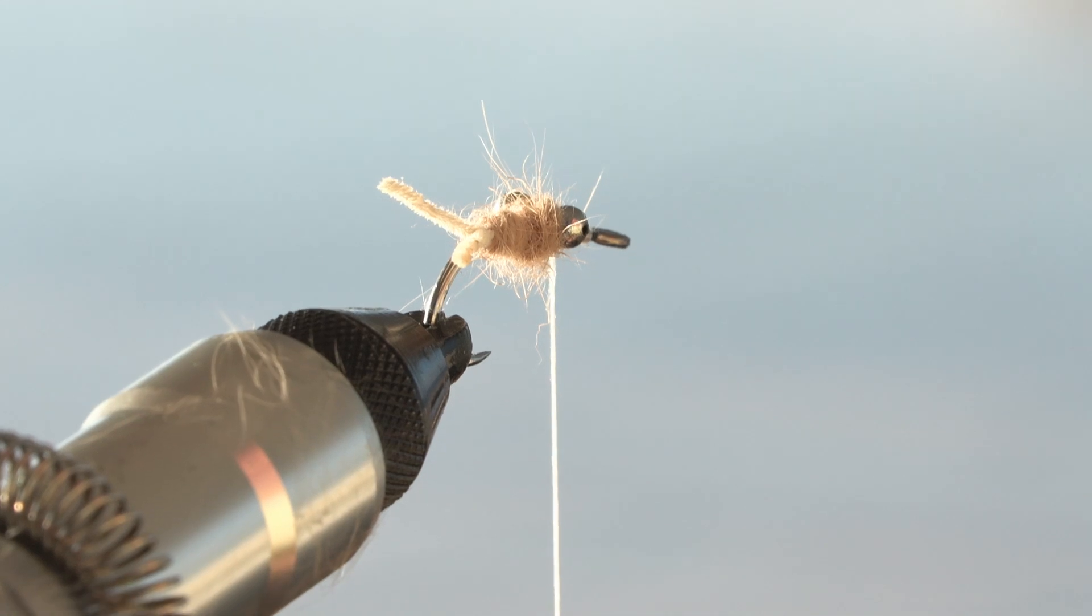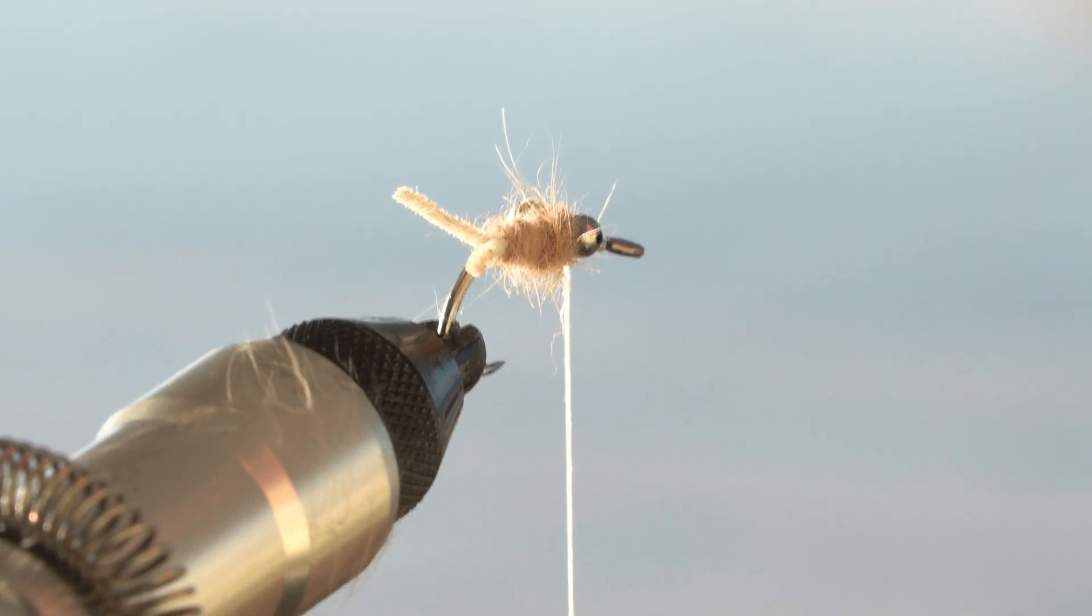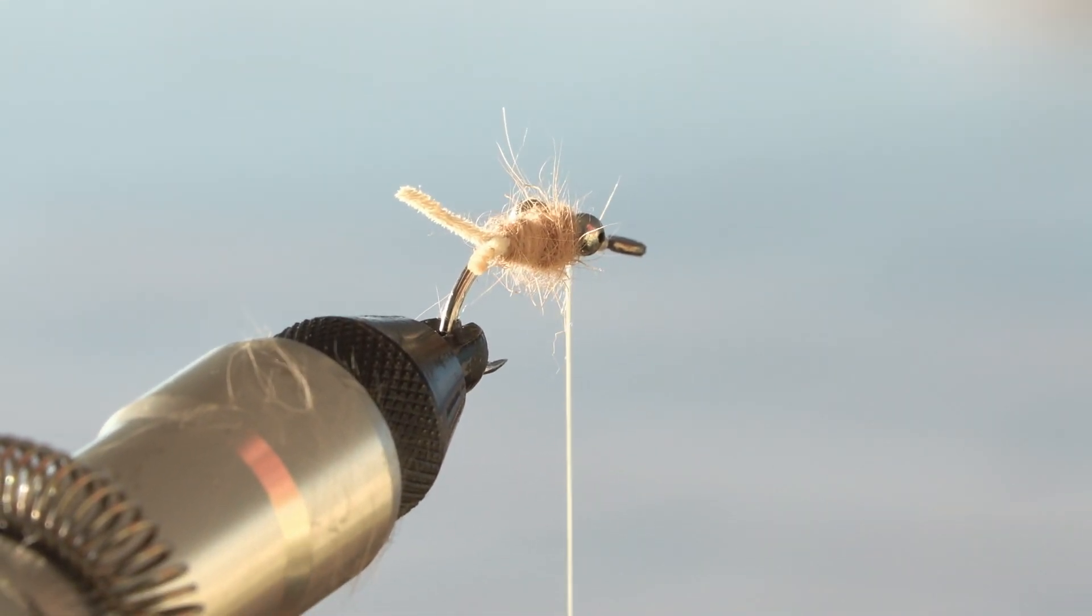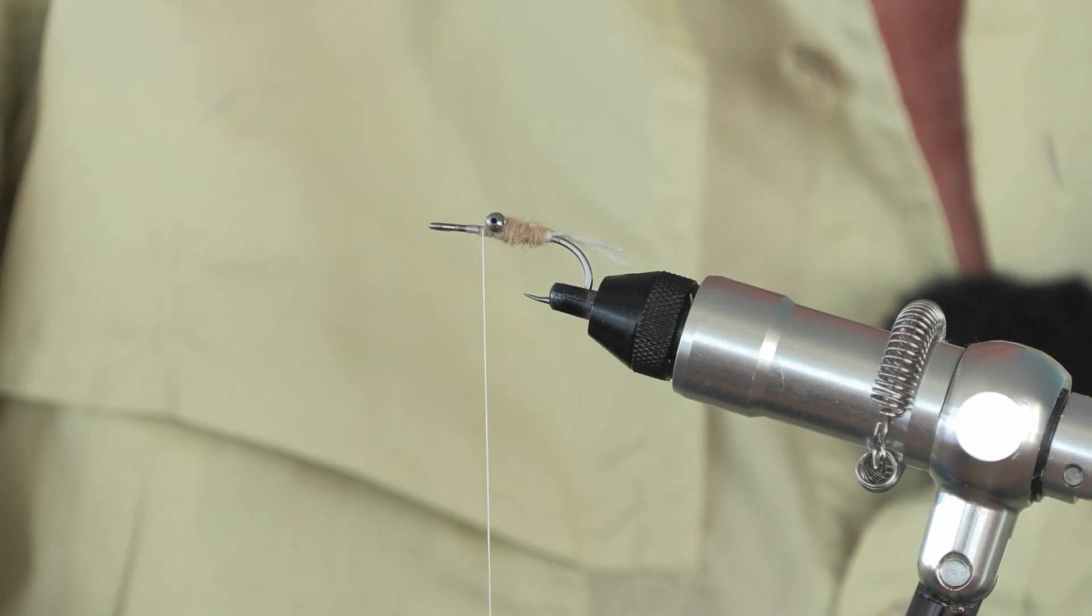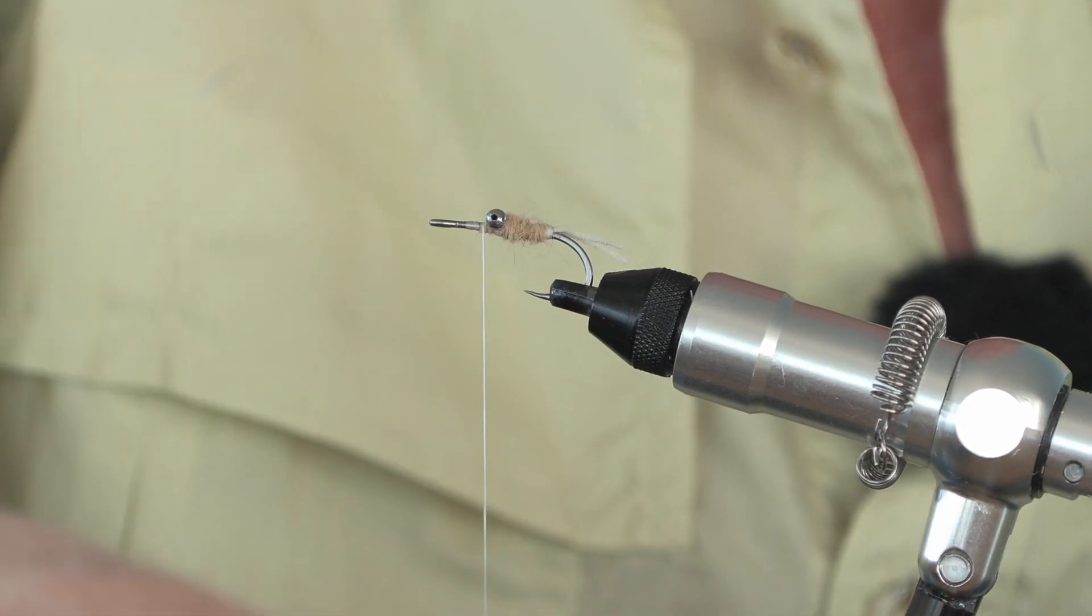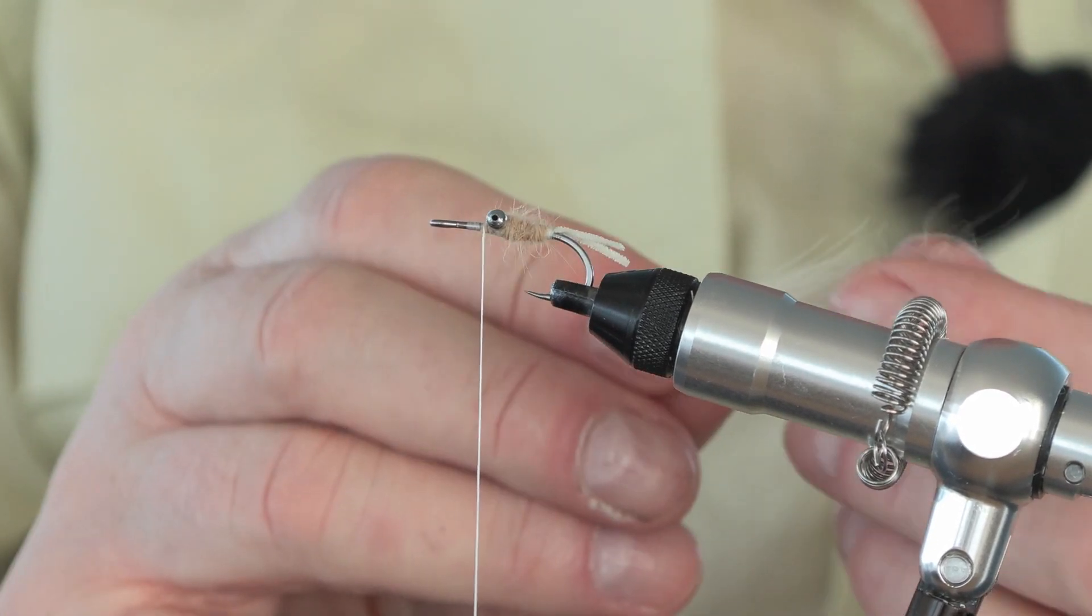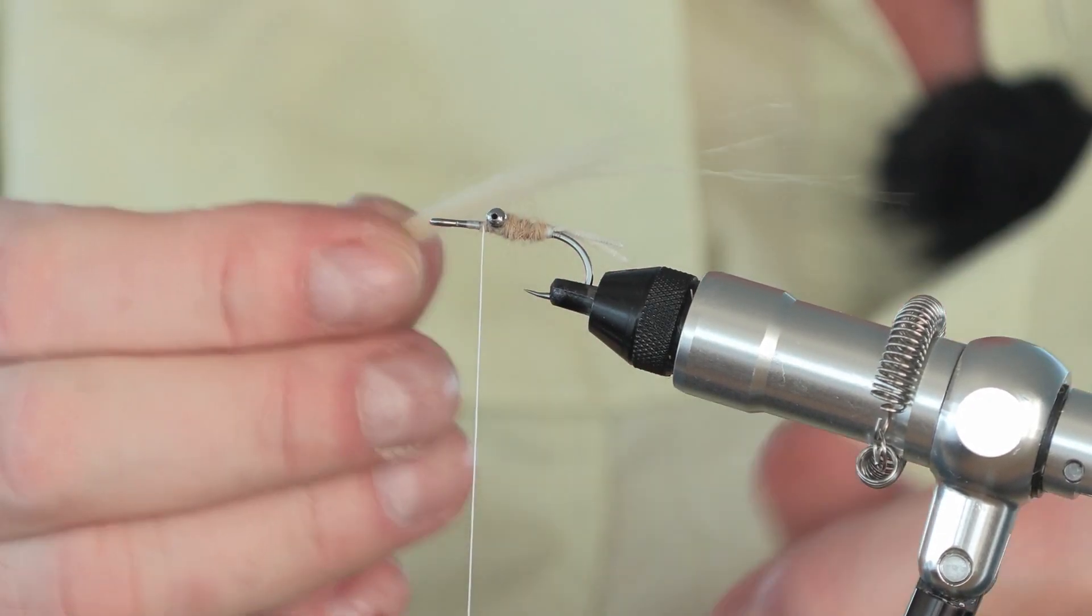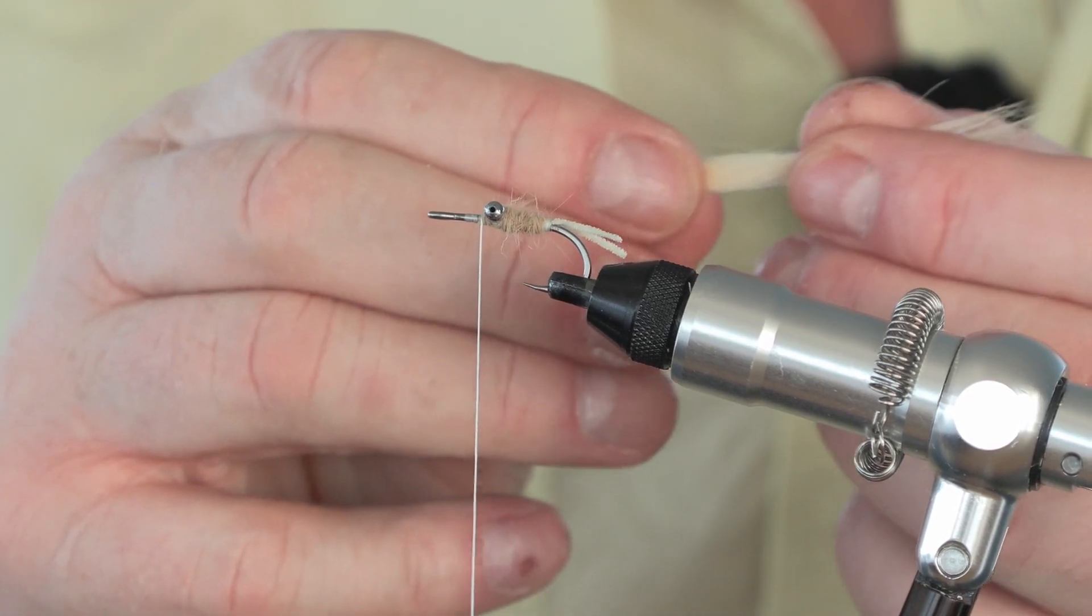Next we put in the beard. Now the beard is there to actually imitate the legs of the shrimp. And for this I use tan colored nyatt hair. Nyatt is a very durable and stiff material and it holds its shape really well when in the water. And this you want to be quite long. This is why I call it the super gotcha because it needs to have a really long beard.